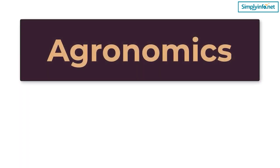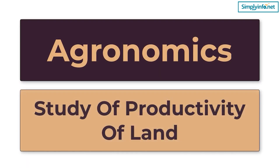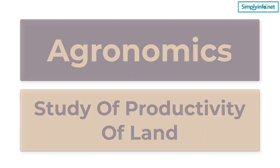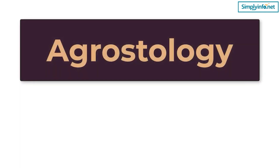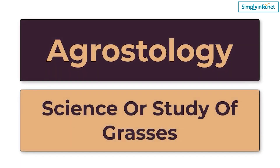Agronomics – Study of productivity of land. Agrostology – Science or study of grasses.